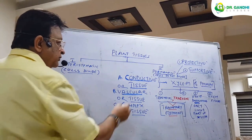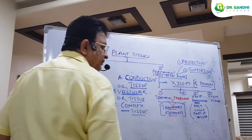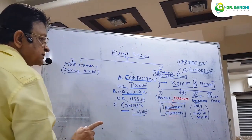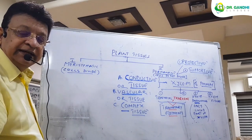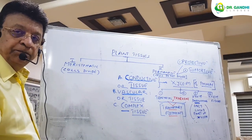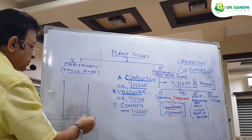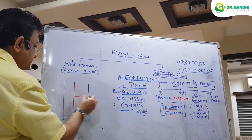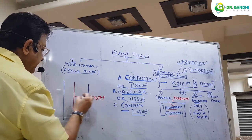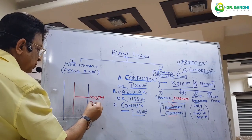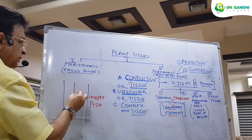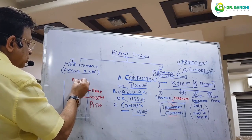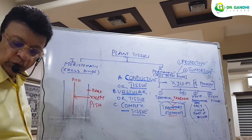We now begin the study of the first conducting tissue, known as xylem. Where is the xylem present? It is present in the pit of a plant — the pit is the central part. So if this is the plant, the xylem is located in the center, known as the pit. The outer part is known as bark, and the inner one is the pit where the xylem is located.